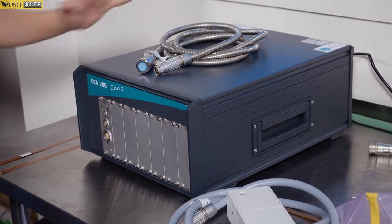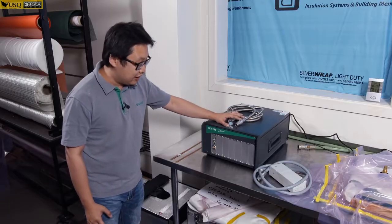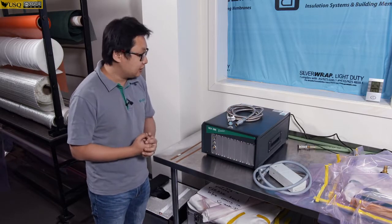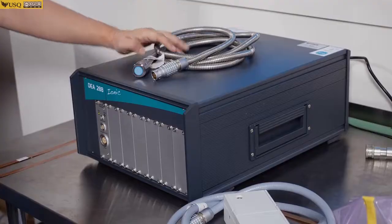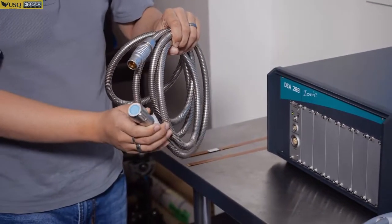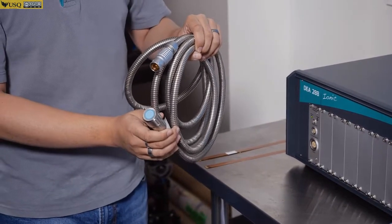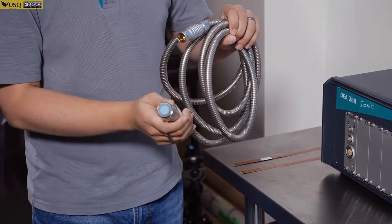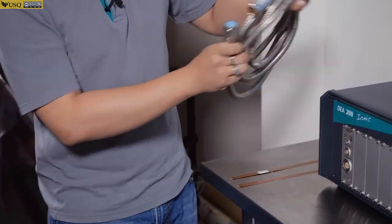First of all, for the DA Direction Analyzer, it comes with two different sensors. The first one we have is this one. This is what we call a tube-mounted sensor. This is designed to mount on injection molding instruments.